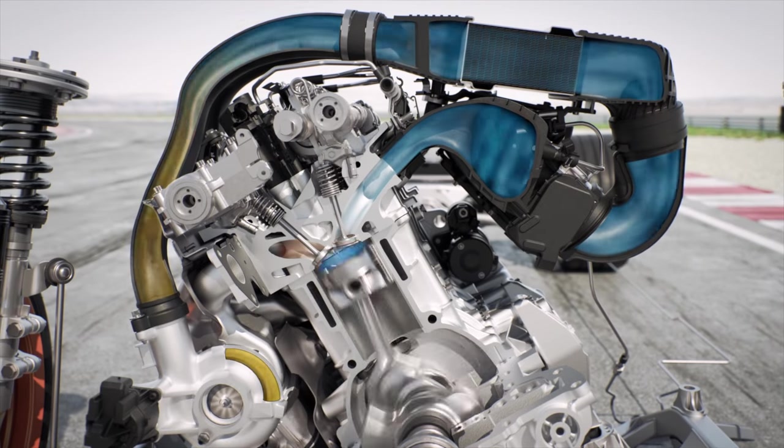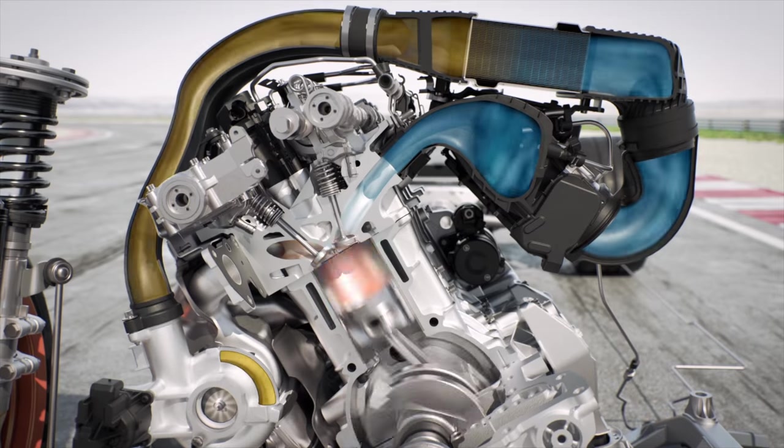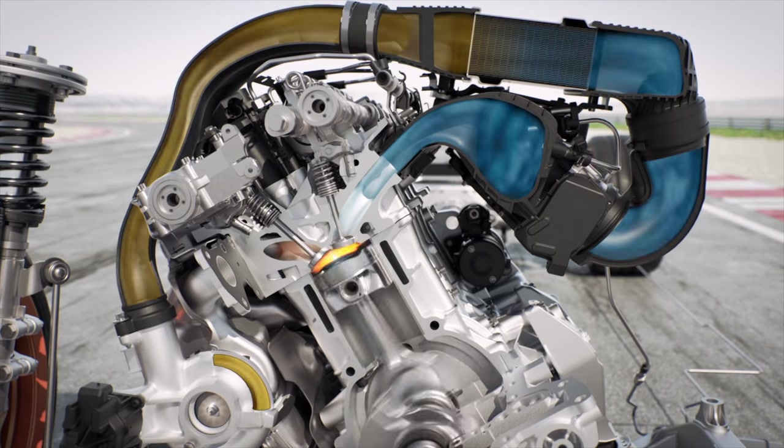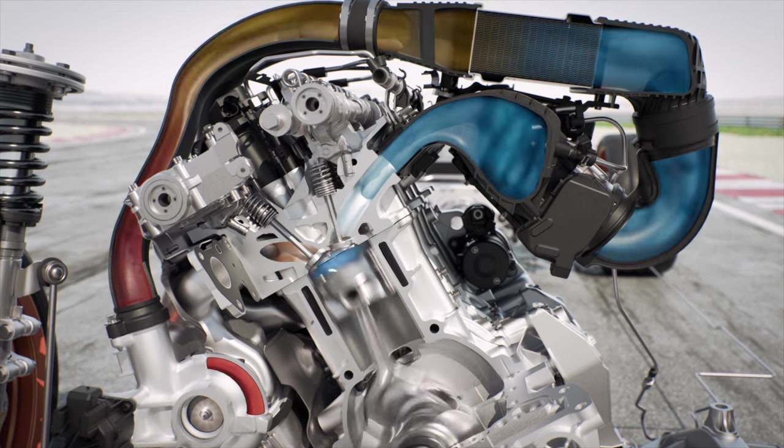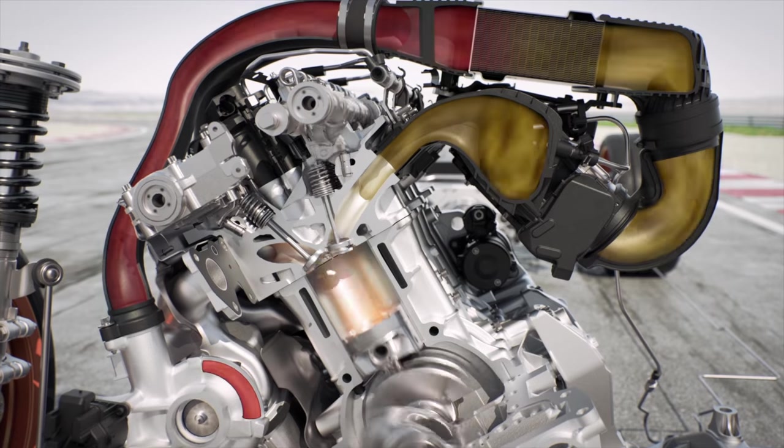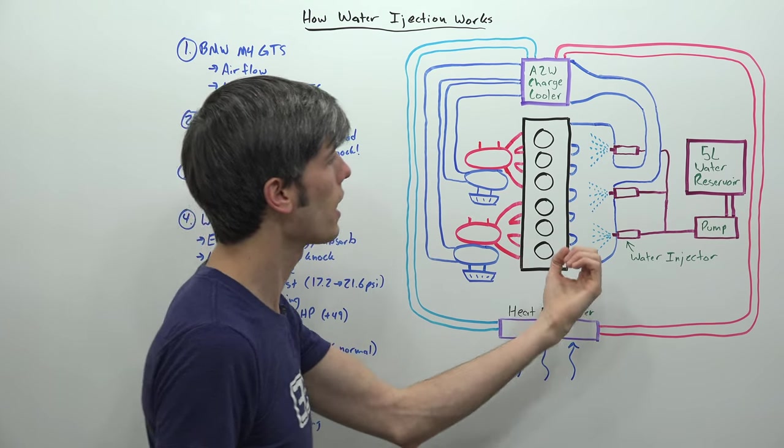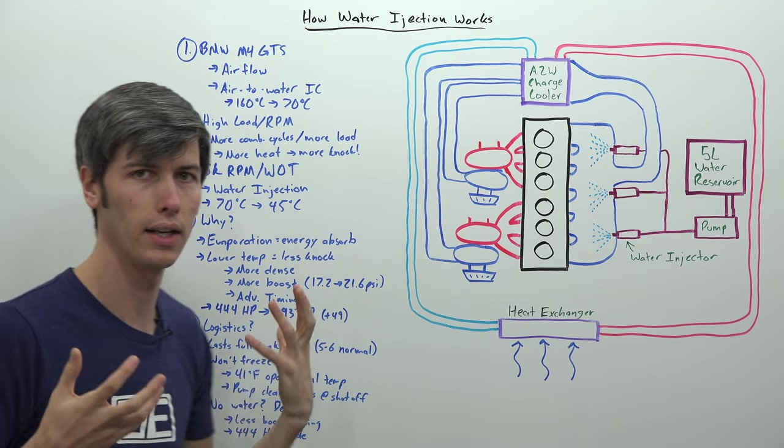And so as you start to get into higher RPM, as you start to have more combustion cycles per unit of time, that of course means that you're going to have more heat in that engine. And as you're starting to get into higher load scenarios when you're flooring it and you're making maximum power using full boost from these turbochargers, of course that also means you're going to make more heat. And so as a result, the likelihood of running into knock becomes an issue. So what do we do about this? How do we prevent knock from occurring?